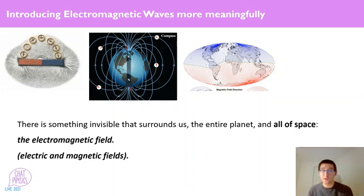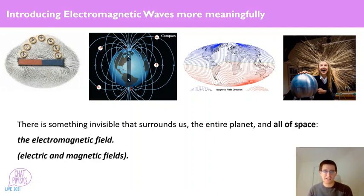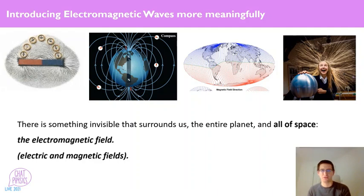Students will already be familiar with what magnetic fields are — the invisible magnetic field in the space around a magnet, and the Earth's invisible magnetic field all around it. When you're walking across the surface of the Earth, you're walking through the Earth's magnetic field, detectable with a compass. They might also be familiar with the invisible electric field surrounding a Van de Graaff generator. So we extend that idea: all around us, through the entire planet and all of space, we are walking through the Earth's electric and magnetic fields. We can combine those — we just call them the electromagnetic field.